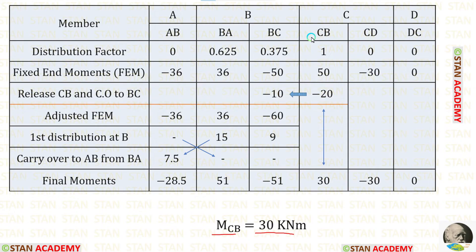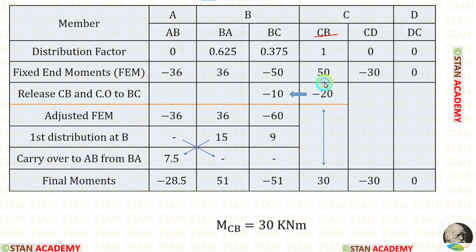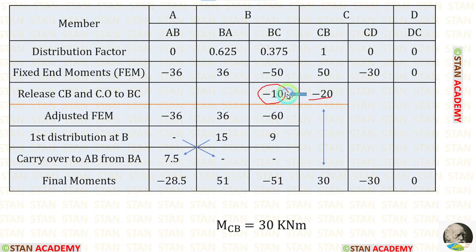In the table, we need CB to be 30. The fixed end moment for CB is 50. When we add −20 to 50, we get 30 — so we have released CB and made it 30. Now we give a carry over from CB to BC: half of −20 goes to BC, giving −10. For the adjusted fixed end moments, AB and BA have no changes. For BC, we add the two values to get −60.